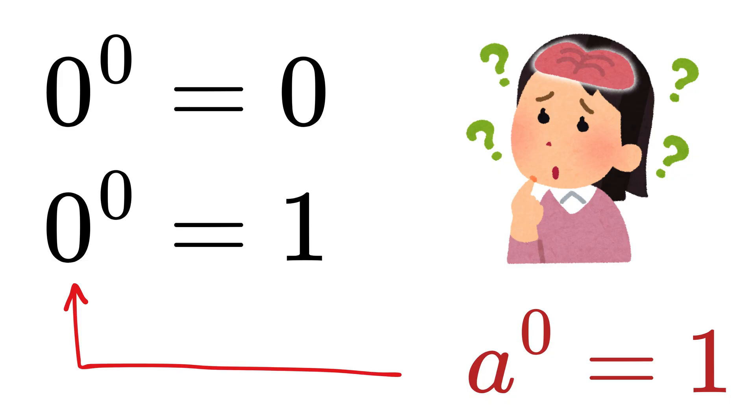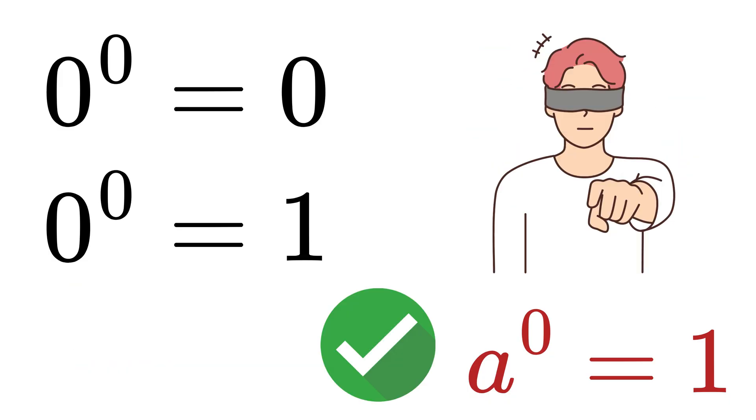But this is where things get messy. If we blindly follow the rule that anything raised to power zero is one, then we are ignoring the fact that the base is also zero, which itself behaves very differently.